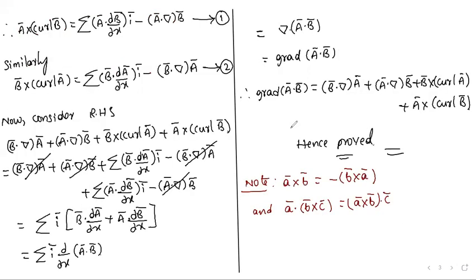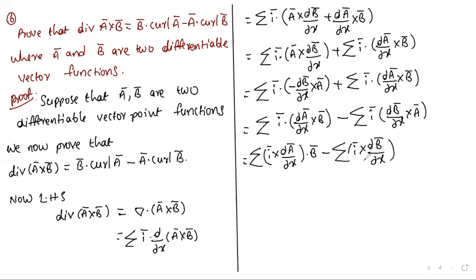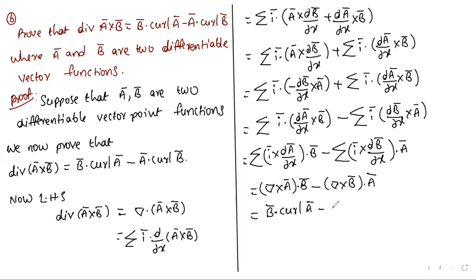This equals (del cross Ā)·B̄ minus (del cross B̄)·Ā. Using the dot product commutativity: equals B̄·curl(Ā) minus Ā·curl(B̄).